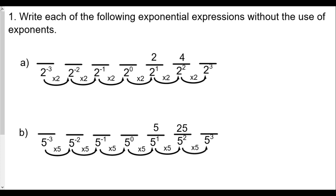We're looking at base 2 raised to powers from negative 3 up through positive 3. Moving forward by raising the power by one, we multiply by 2. So 2 to the first is 2, 2 to the second is 4, and 2 to the third is 8 — we multiply 2 by 4 to get 8. Going backwards, we divide by 2: 2 divided by 2 gives 1, so 2 to the zero power equals 1.